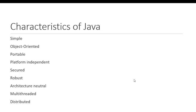Now we will see the characteristics of Java. There are many characteristics of Java. The ones we will cover in this session are: Java is a simple language, object-oriented language, portable language, platform independent language, secured language, robust language, architecturally neutral language, multi-threaded language, and distributed language.